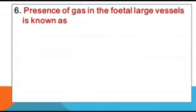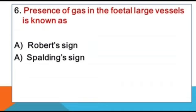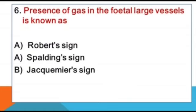Presence of gas in the fetal large vessels is known as — options: Robert's sign, Spalding sign, Jackman sign, Palmer sign.